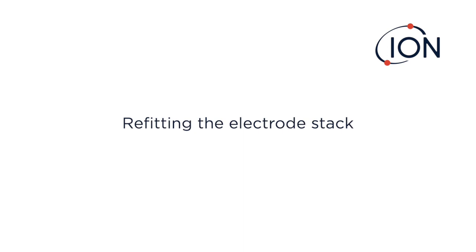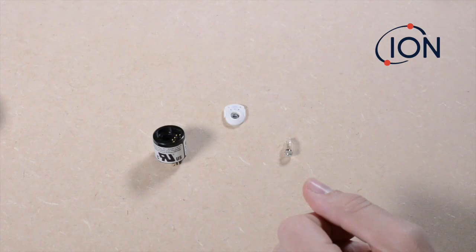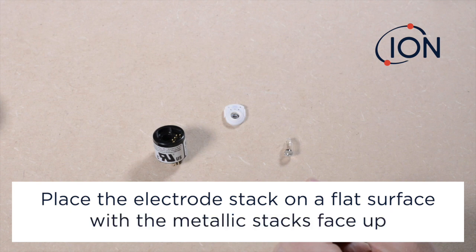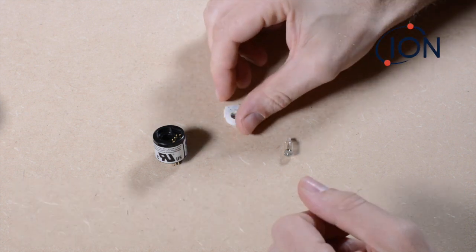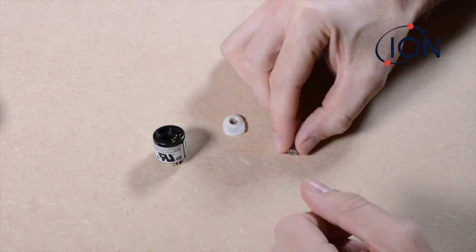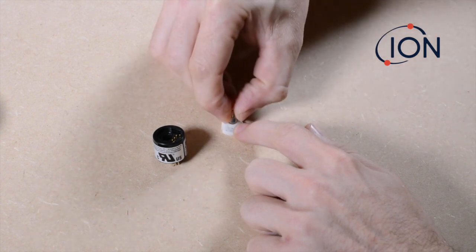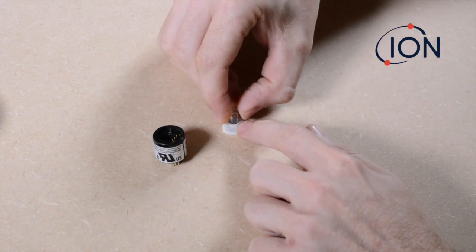The best method of fitting the electrode stack to ensure a good seal between lamp and stack is to firstly place the electrode stack on a flat surface with the metallic stacks face up. Next, supporting the stack in place, hold the lamp by the glass body and gently twist and push the lamp into the electrode stack.